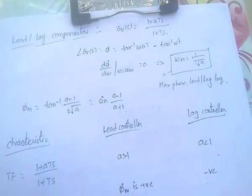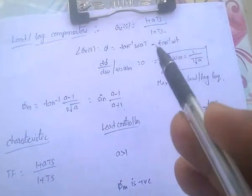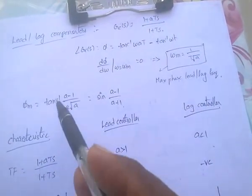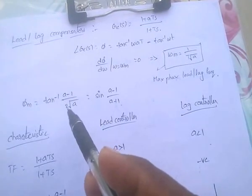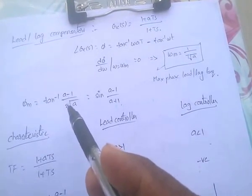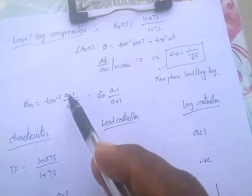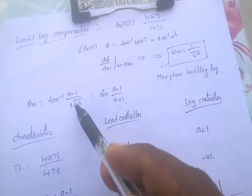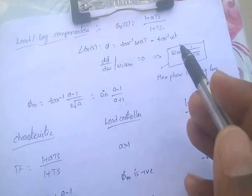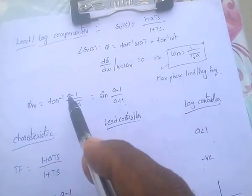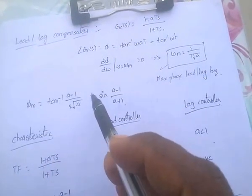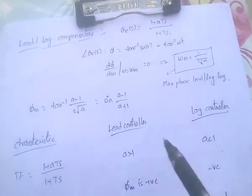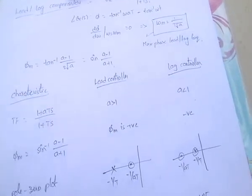The value of φ_M — that is the maximum angle of GC(S) — equals tan⁻¹[(A−1) / (2√A)], which is also equal to sin⁻¹[(A−1) / (A+1)].